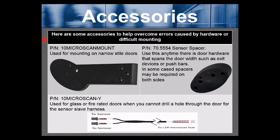Accessories. Here are some accessories to help overcome errors caused by hardware or difficult mounting. Part number 10MICROSCANMOUNT used for mounting on narrow style doors. Here the profile is the same profile of the sensor. We have an arm here that can mount on a narrow style aluminum door. Typically this would not give you enough room to mount on a narrow style aluminum door. But this 10 micro scan mount will allow you to do that.